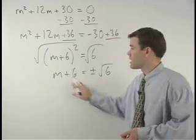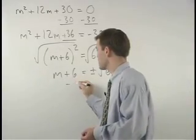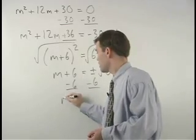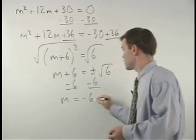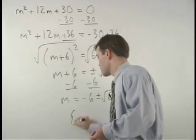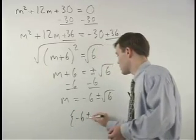To get m by itself, we subtract 6 from both sides, and we have m equals negative 6 plus or minus root 6. And let's write our answer in set notation.